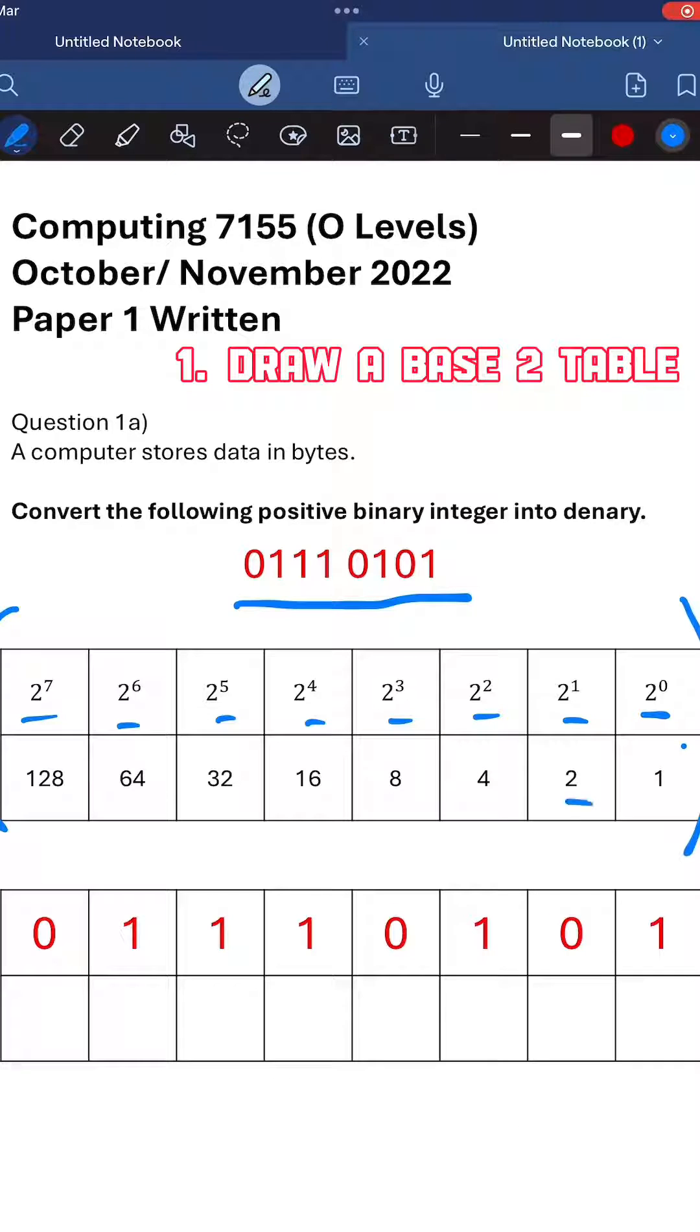So 2 to the power of 0 is 1, 2 to the power of 1 is 2, 2 to the power of 2 is 4, then 8, then 16, then 32, then 64, then 128.